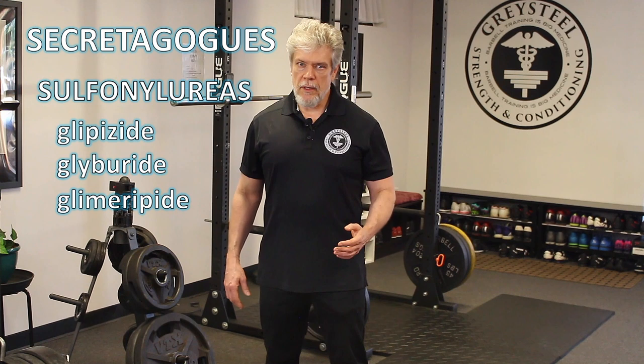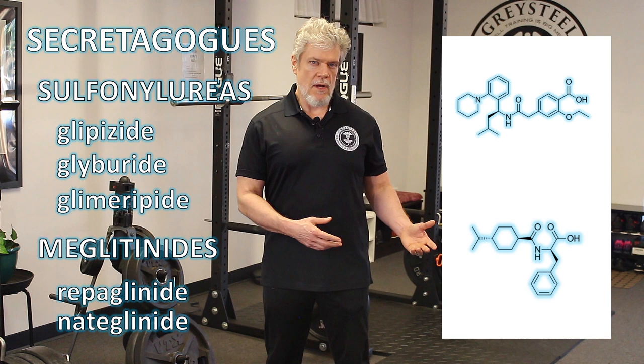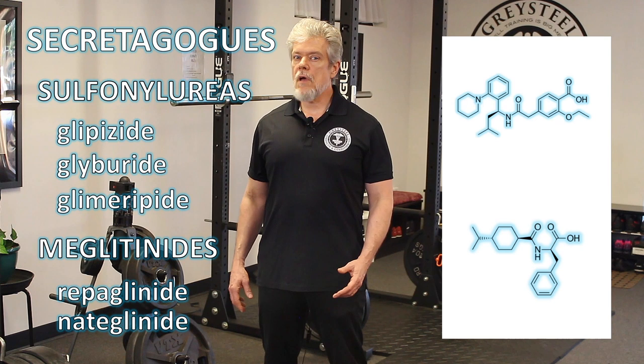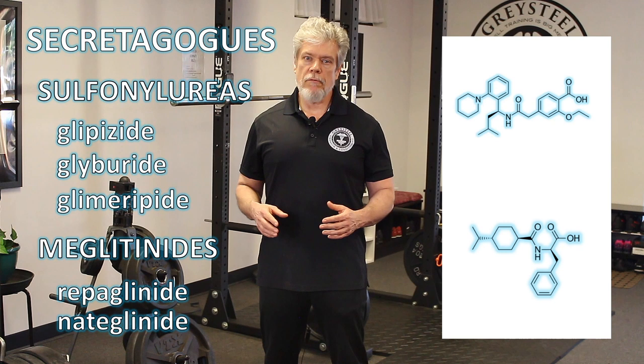The other class of secretagogues is the meglitinides, including repaglinide and nateglinide. These work much the same as sulfonylureas, though they exert their effect on a different region of the potassium transporter. They have a more rapid onset and a shorter duration of action, so they can be used in patients who tend to get large spikes in blood sugar just after eating. They're taken orally and have a side effect profile similar to sulfonylureas, particularly hypoglycemia.